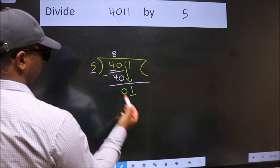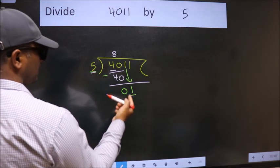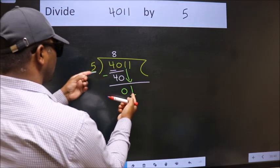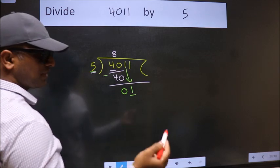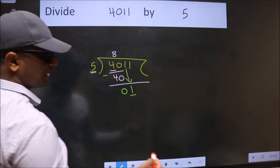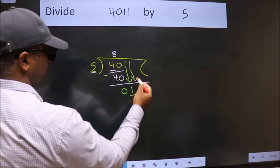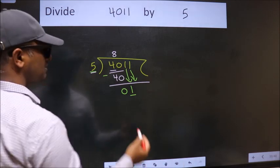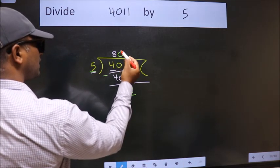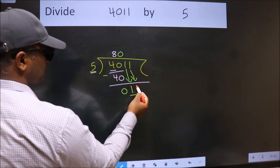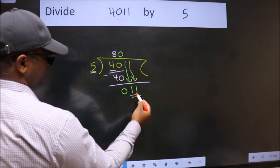Now here we have 1, here 5. 1 is smaller than 5, so we should bring down the second number. And the rule to bring down the second number is put 0 here. Then only we can bring this number down. So 11.